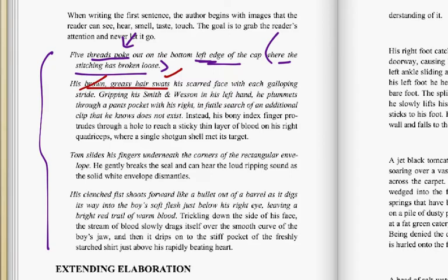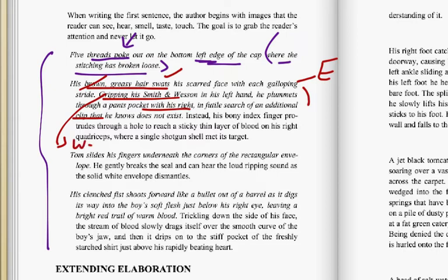His scarred face with each galloping stride. Gripping his vest in his left hand, he plummets through a pants pocket with his right hand in futile search of an additional clip he knows does not exist. We have a lot of concrete images here. If you went back to revise, maybe elaborate a little bit further, but as an example of the diction that allows us to see — even the participial phrase at the beginning: it's not just 'gripping his weapon' or 'gripping his gun,' now we have 'gripping his Smith and Wesson.' This is what we've talked about as factoring language. The word 'weapon' gets factored into 'gun,' and finally factored into 'a Smith and Wesson.'